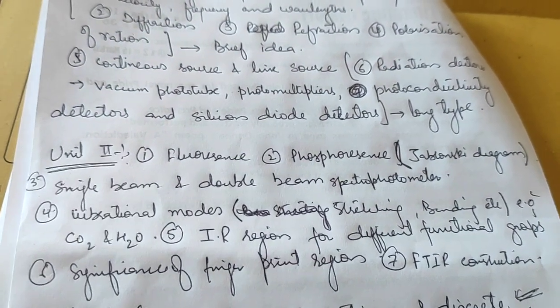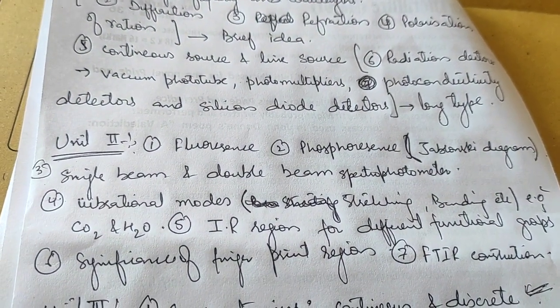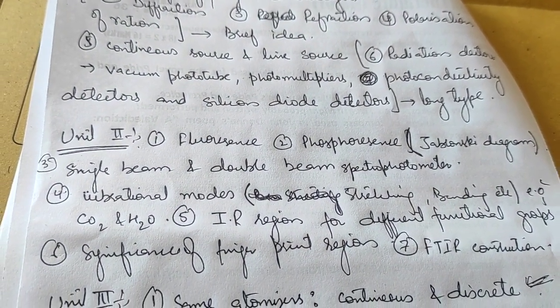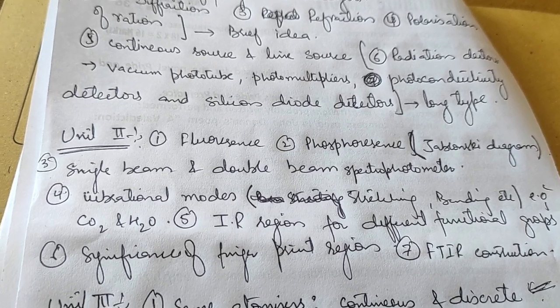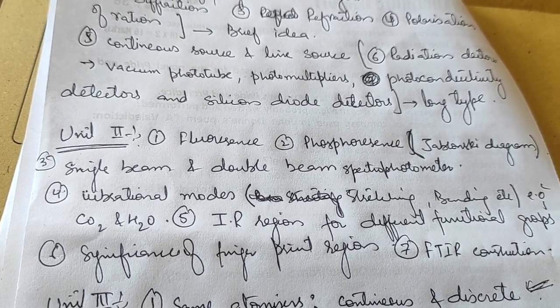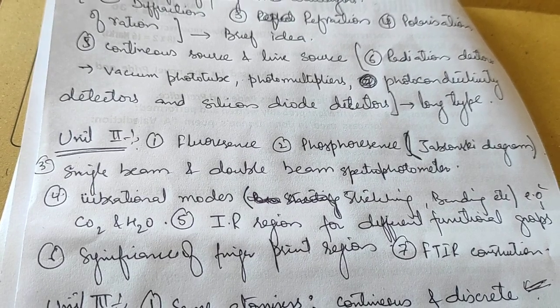In unit second, go through fluorescence and phosphorescence using the Jablonski diagram. Although it's not mentioned in the syllabus, go through this Jablonski diagram. For a long-type question, you can pick single-beam and double-beam spectrophotometers.